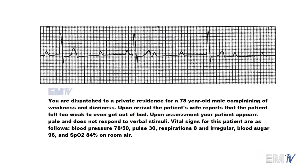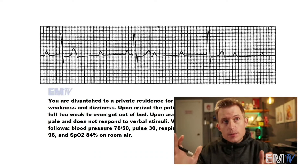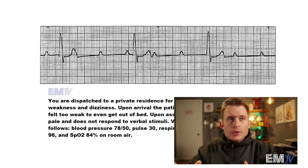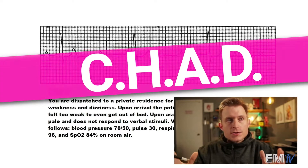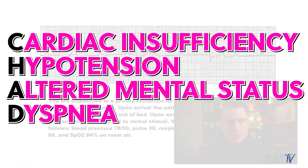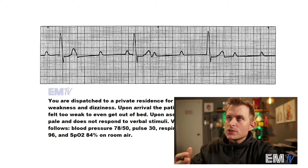Let's go ahead and read the story here and find out if this is a stable or an unstable scenario. Your unstable criteria, of course, is CHAD: Cardiac insufficiency, Hypotension, Alteration of mental status, and Dyspnea. Let's take a close look at the story and determine whether or not this patient is stable or unstable.